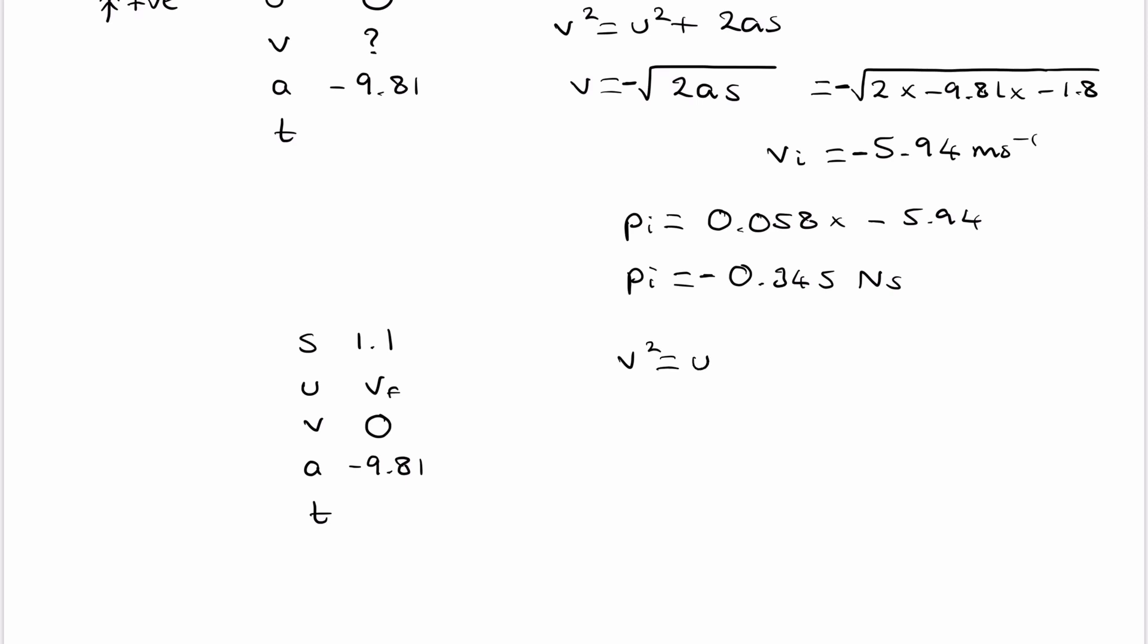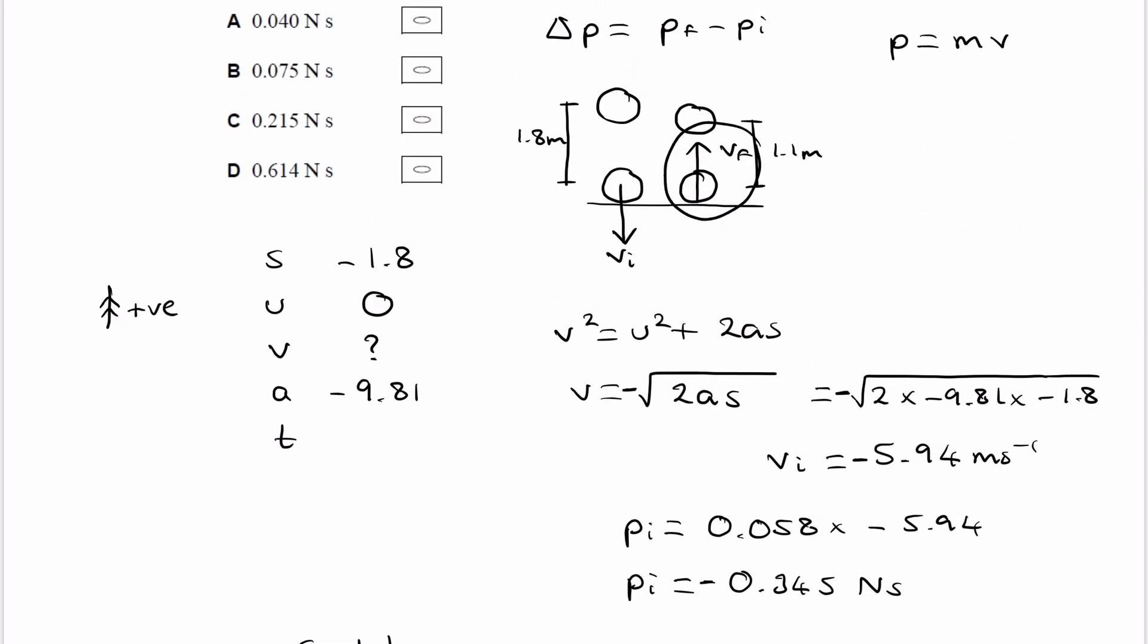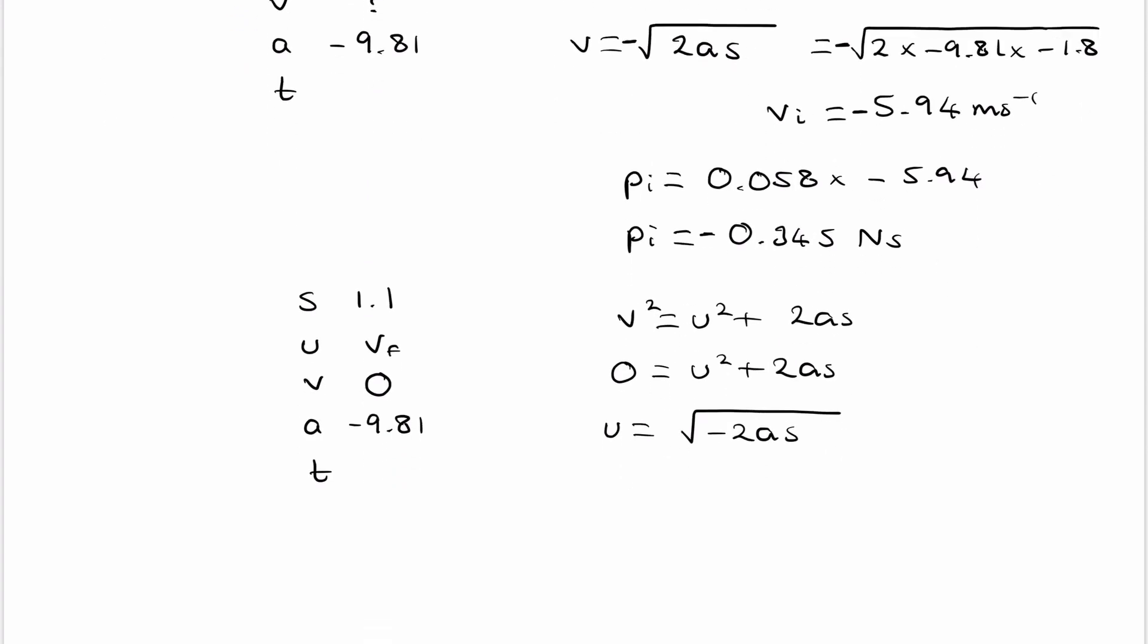Again, we can use v squared is u squared plus 2as. v is 0 in this case. So 0 is u squared plus 2as. Bring the 2as to the left-hand side and square root. So it's the square root of negative 2as. And will our velocity be positive in this case? Let's have a look. So it's going upwards. So therefore it must be positive. So u is vf. And that's equal to the square root of negative 2 times minus 9.81 times 1.1, and that gives us 4.65.